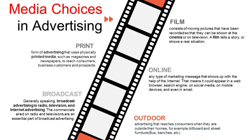There are several media for advertising. First is film — film consists of moving pictures that have been recorded so they can be shown at the cinema or on television. Film sometimes tells a story or information about the products in real situations. Second is online advertising — any type of marketing message that shows up on the internet, such as web browsers, search engines, social media, mobile devices, or even email.